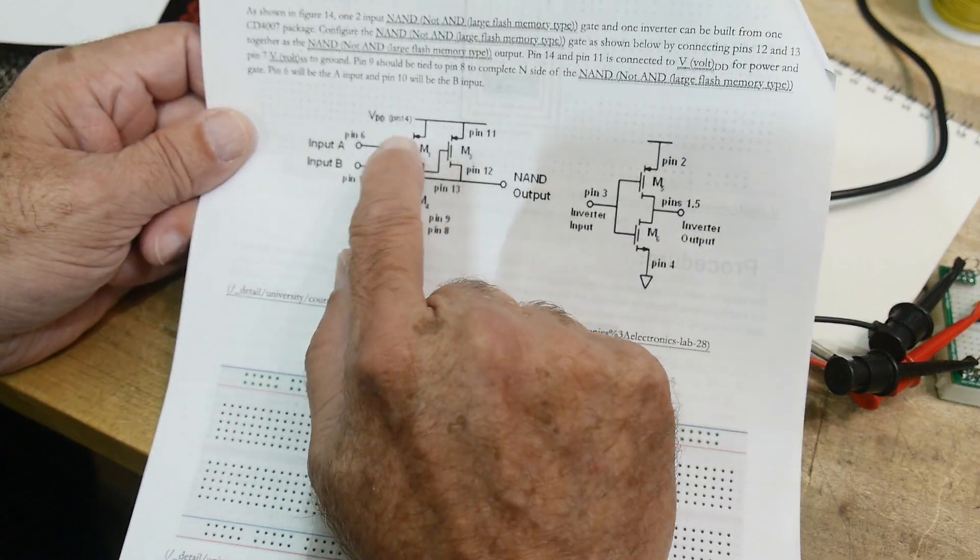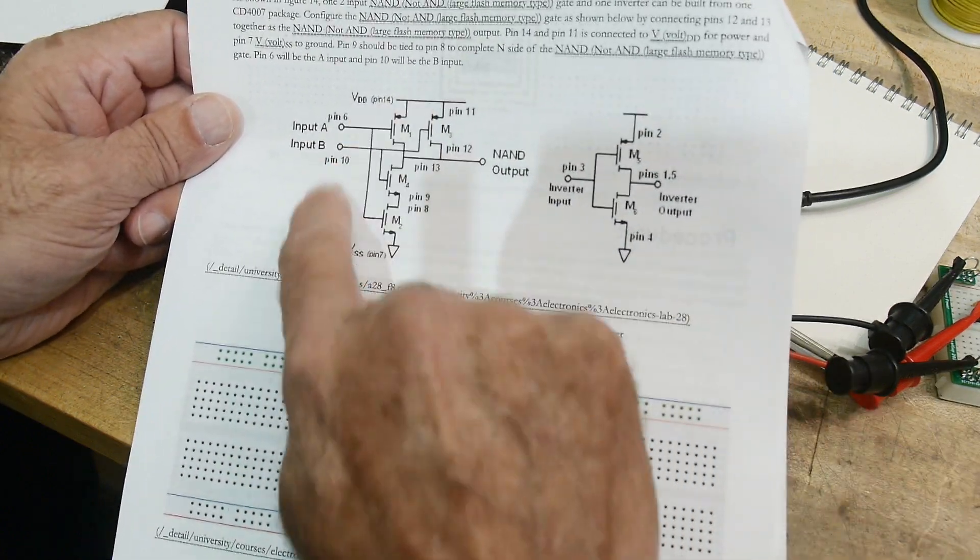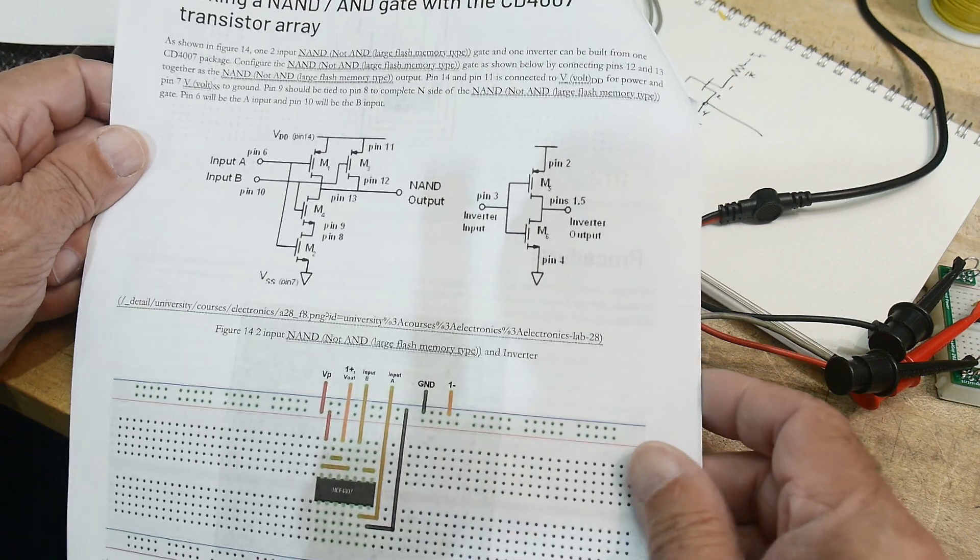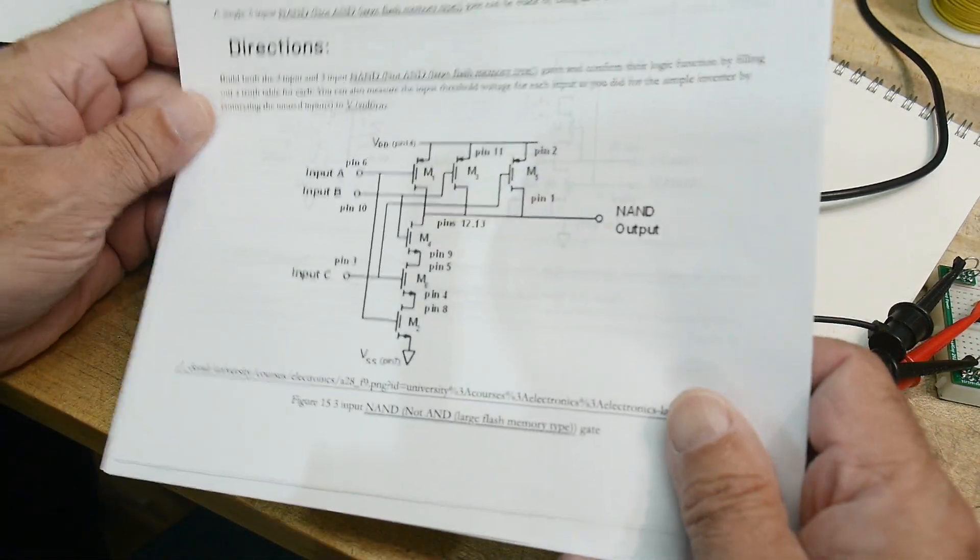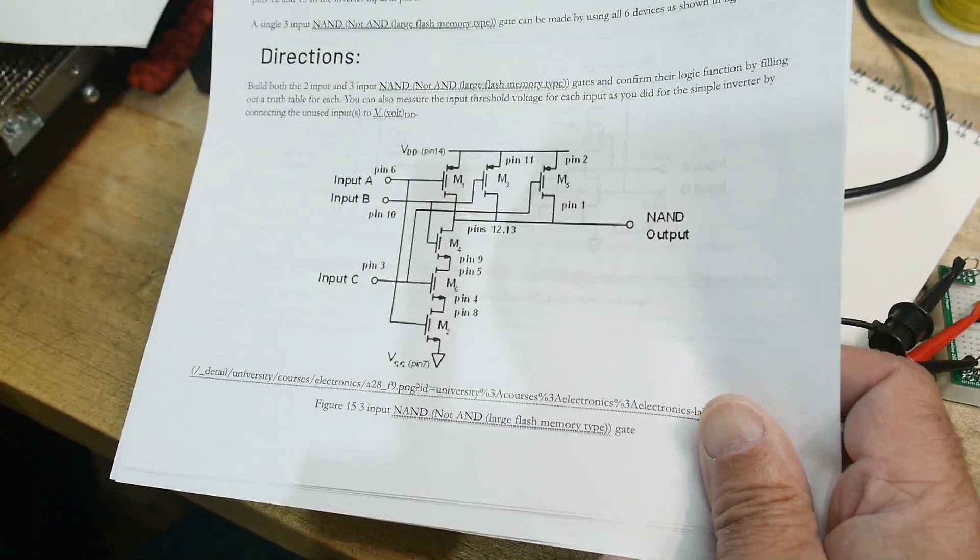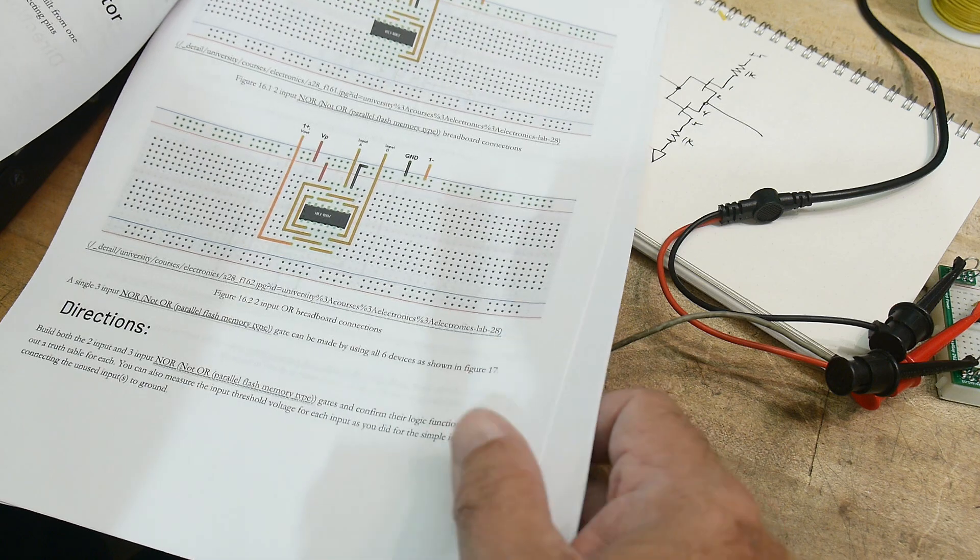And there's some other inputs and stuff here, but it shows you how to do that. So this is a NAND gate. Here's an inverter. This is how to... This is still talking about the NAND gate. Okay.